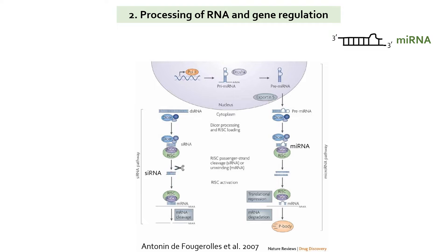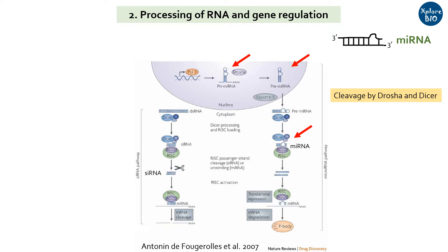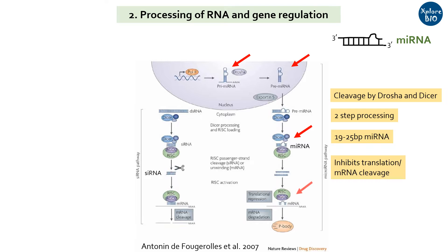Regarding processing: primary miRNA occurs as an imperfect stem-loop structure, which is processed by Drosha to form precursor miRNA within the nucleus. Next, it is processed by Dicer after getting exported by Exportin-5 to the cytoplasm. Thus, miRNA processing is a two-step process, which leads to the formation of 19 to 25 base-pair long mature miRNA. The miRNA duplex then forms RISC with the Argonaute protein. After unwinding, one of the strands helps RISC target mRNA, resulting in translation inhibition or mRNA cleavage. Sometimes miRNA functions through a Dicer-independent pathway, although this mechanism is poorly understood.